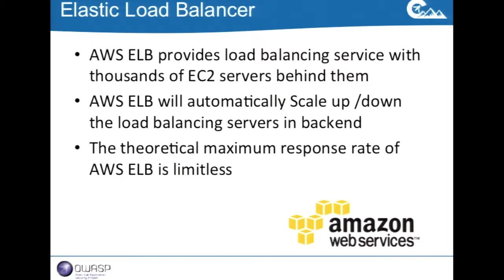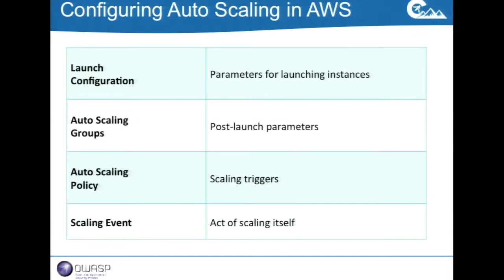Here's how auto scaling is configured in Amazon — there are four basic components. First, you configure your launch configuration, essentially a file that sets parameters for how an instance is going to start. Second, you configure auto-scaling groups, which define post-launch parameters: how instances are instantiated and where they're placed. Third, auto-scaling policy — the rules by which your infrastructure scales. And finally, there are actions that happen during the scaling event itself.